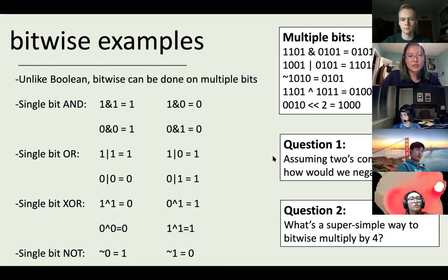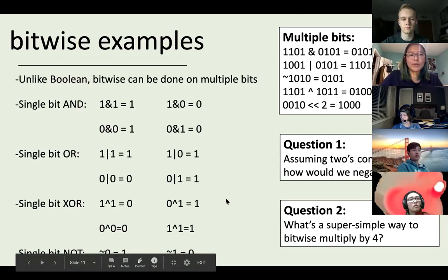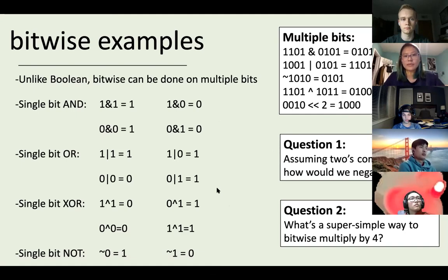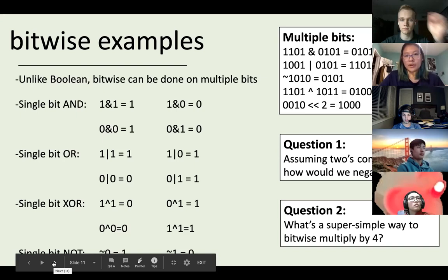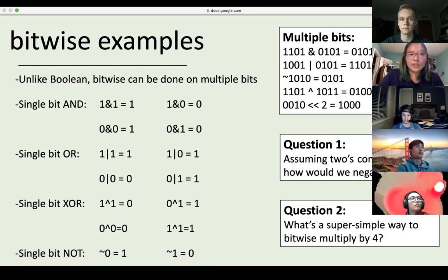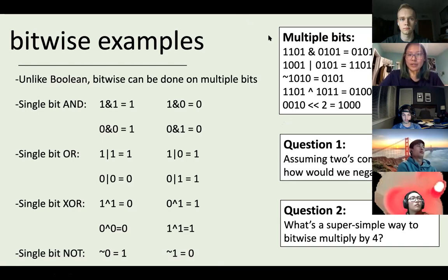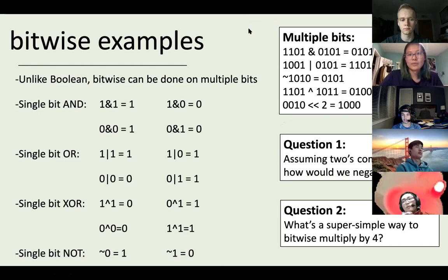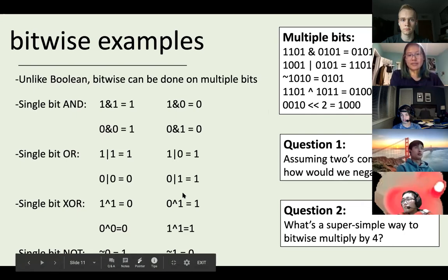For the bitwise NOT operation, the input is simply inverted: NOT 0 = 1 and NOT 1 = 0. For multi-bit operations, we apply the bitwise operation to every single bit position. For example: 1101 AND 0101 = 0101; 1001 OR 0101 = 1101; working from right to left through each bit position.